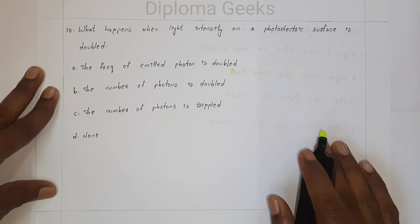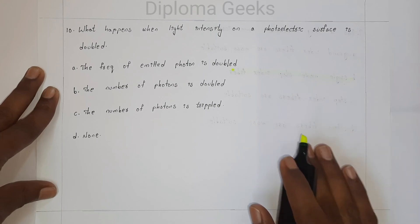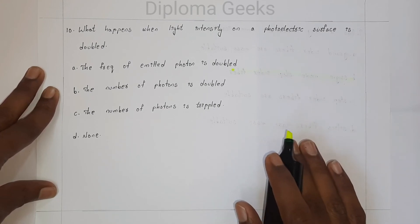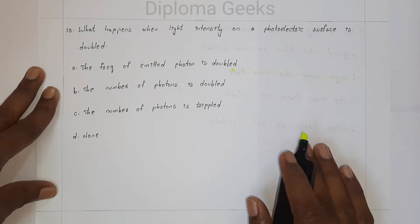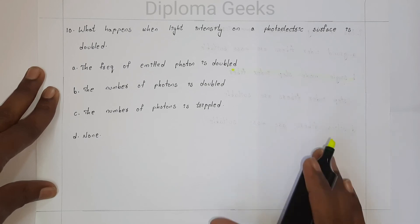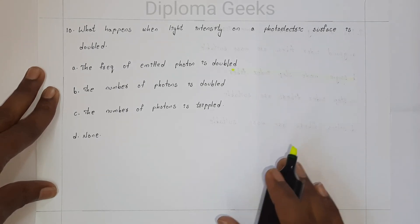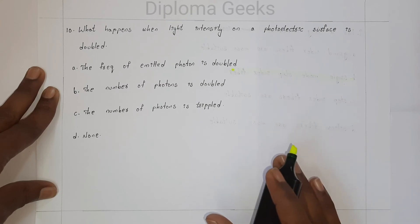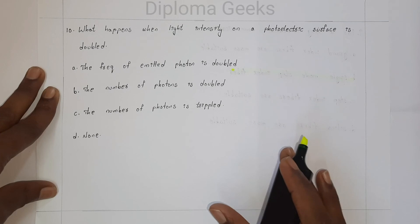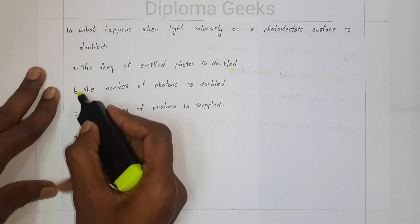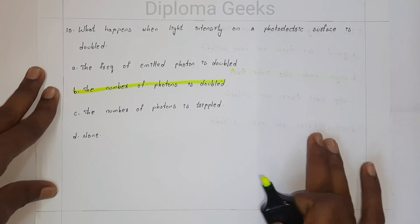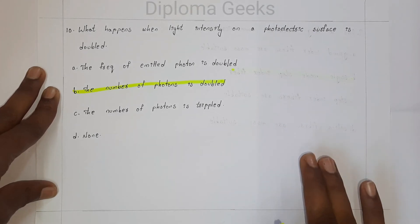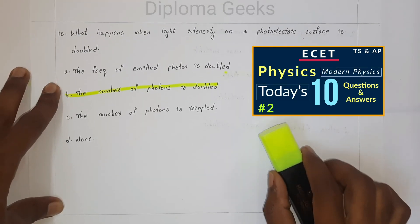Question number ten: what happens when light intensity on a photoelectric surface is doubled — option A: frequency of emitted photon is doubled, option B: number of photons is doubled, option C: number of photons is tripled, option D: none. When the intensity on a photoelectric surface is doubled, the number of photons must be doubled. So the answer is option B: the number of photons is double. These are the 10 most important questions from Modern Physics.